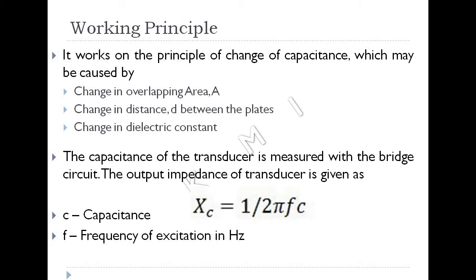We have to change the impedance equation: X equals 1 divided by 2-pi times frequency times capacitance. We also use a bridge circuit, which has 4 parts — 3 resistive arms and 1 capacitive arm.